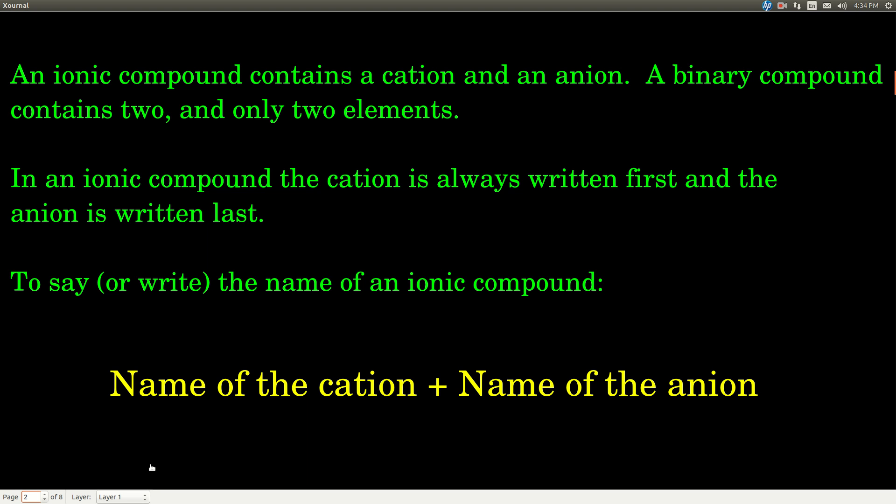When you write an ionic compound, the cation always goes first on the left, and the anion always goes last on the right, in both the name and the formula. It's really easy to say or write the name of an ionic compound. You just say the name of the cation followed by the name of the anion, and there are just a few things to watch out for. Remember that monatomic anions have their endings changed to IDE, and with cations, you have to watch out for those Roman numerals — use them when you're supposed to, but don't use them if you're not.